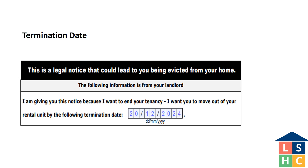The N5 notice gives the tenant 3 options. Option 1: correct all the issues identified and void the notice within 7 days. Option 2: move out of the unit by the termination date. Or option 3: ignore the notice and wait until the landlord files with the Landlord and Tenant Board.